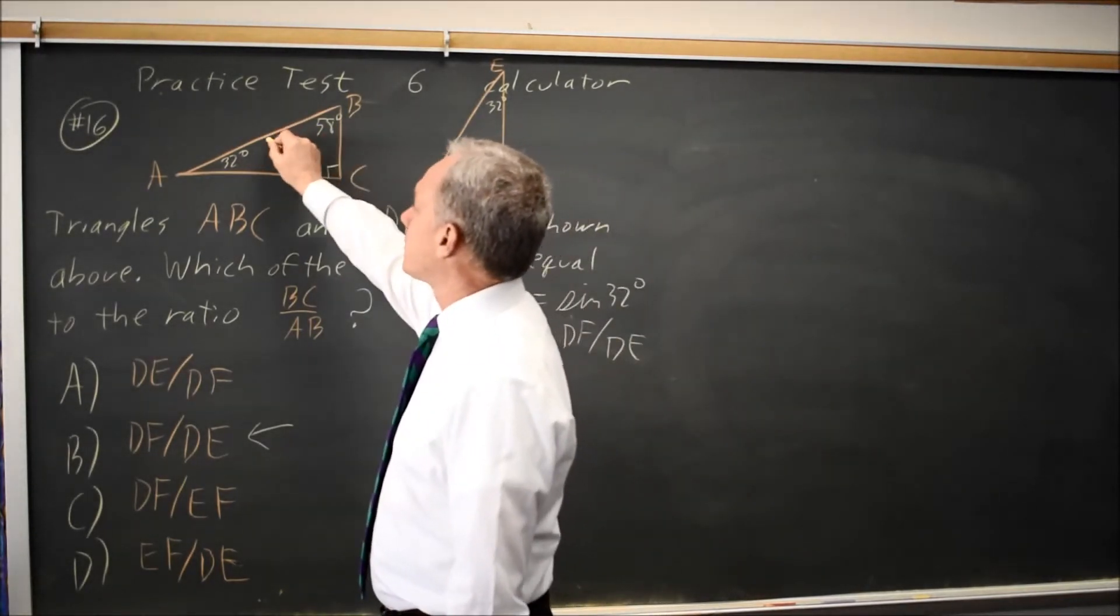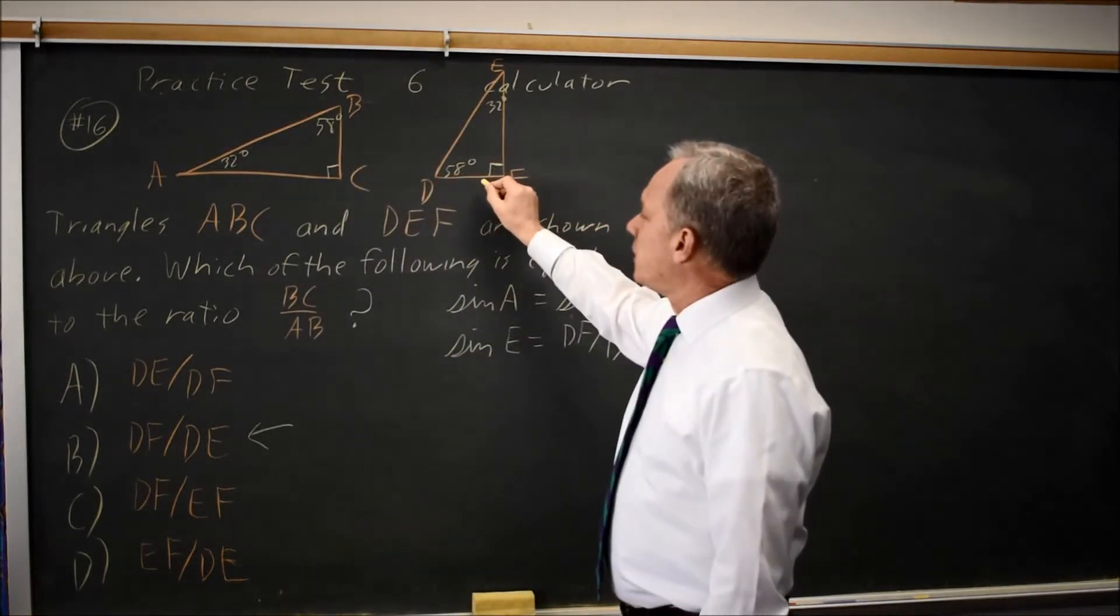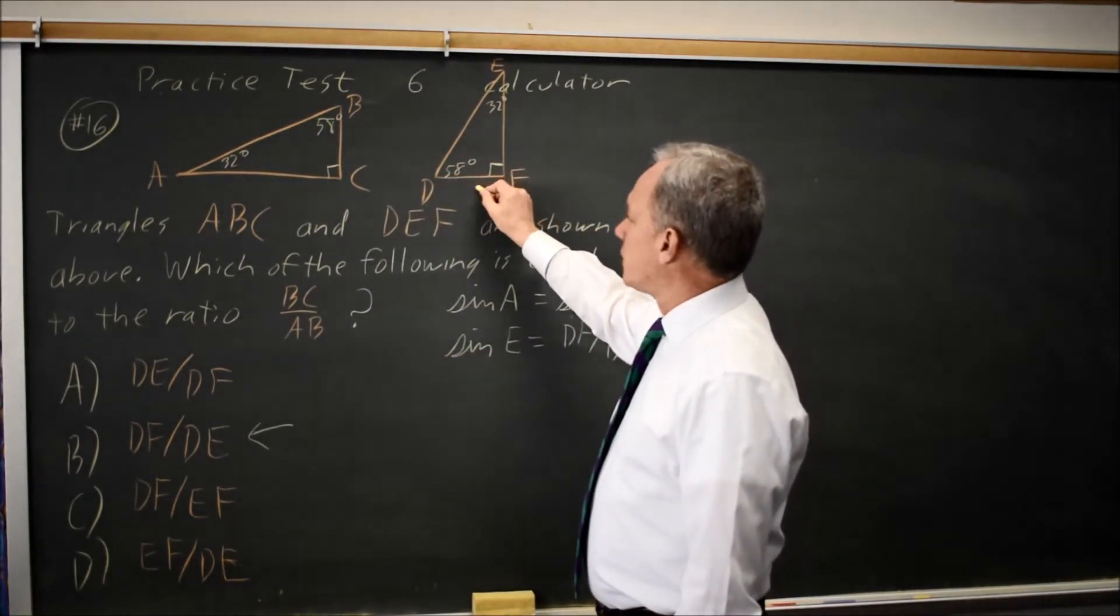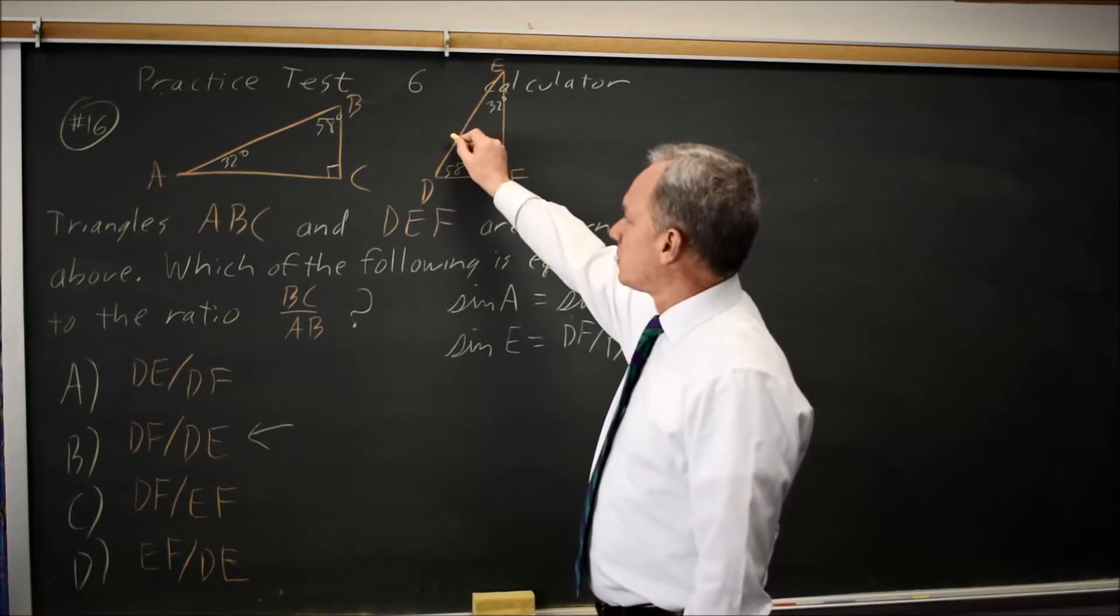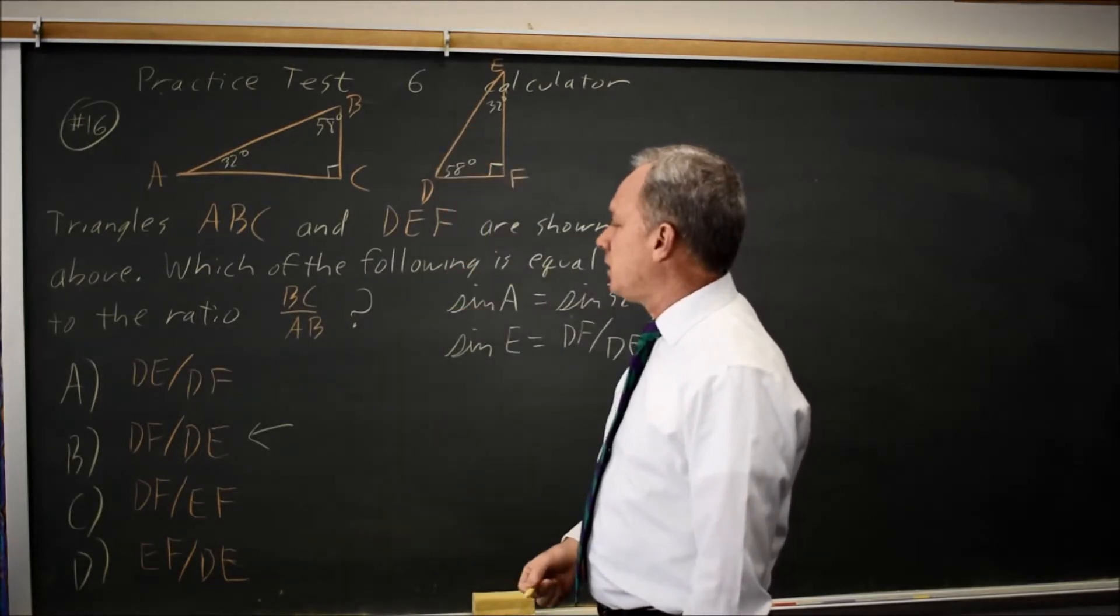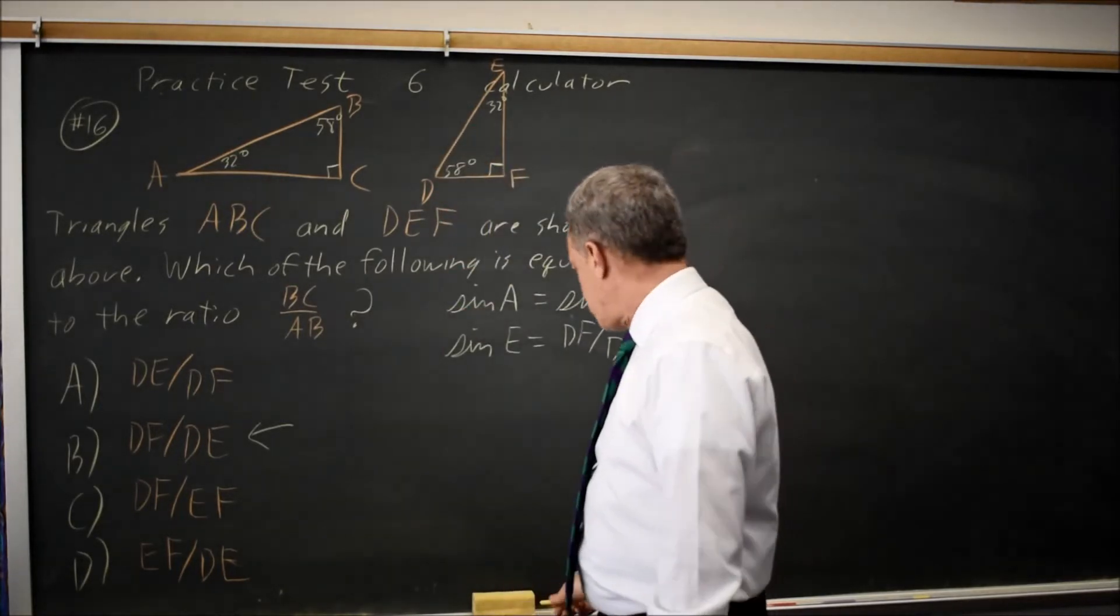So this is the short leg over the hypotenuse. In this second triangle, the short leg DF over the hypotenuse DE will be the same and that also gives us choice B.